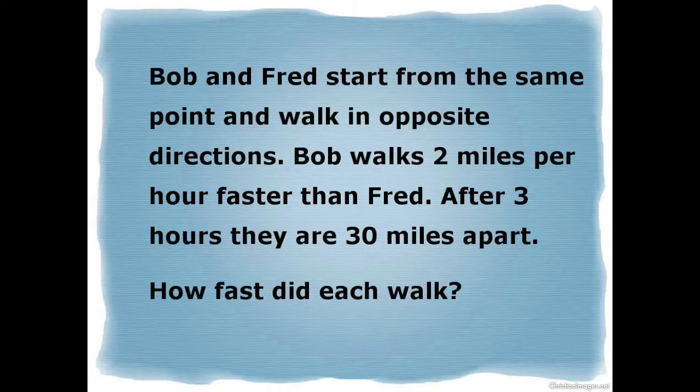Bob and Fred start from the same point and walk in opposite directions. Bob walks 2 miles per hour faster than Fred. After 3 hours, they are 30 miles apart. How fast did each walk?